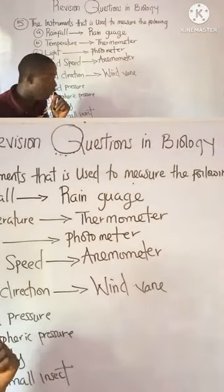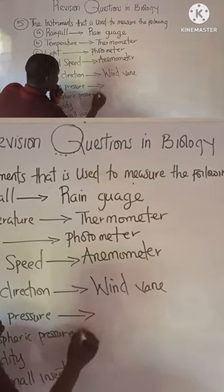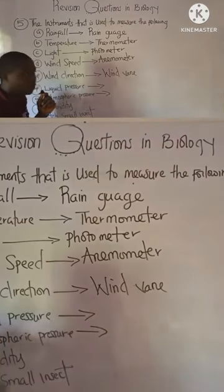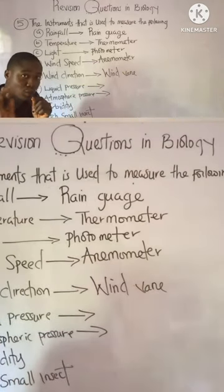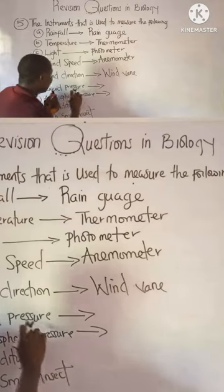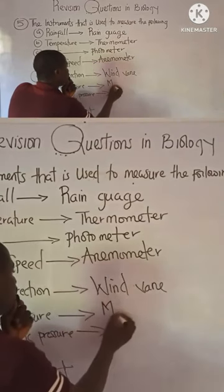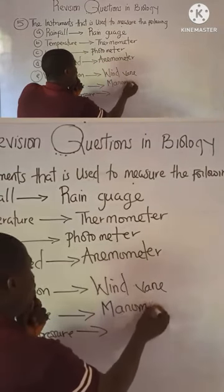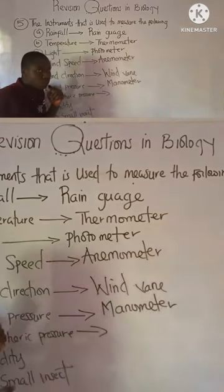Now, what is the instrument used to measure liquid pressure and atmospheric pressure? They are both different forms of pressure. Liquid pressure is measured by an instrument called the manometer, whereby atmospheric pressure is measured by an instrument called the barometer.